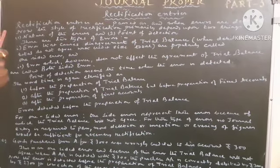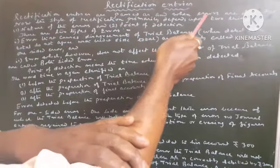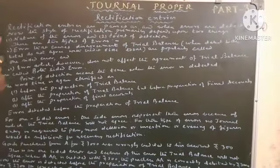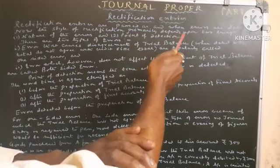What is Rectification Entries? Rectification Entries are passed as and when errors are detected. Now, the style of rectification primarily depends upon two things.